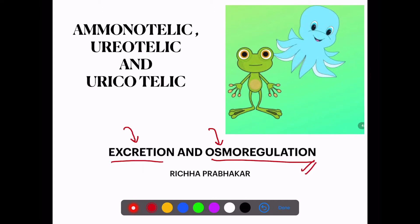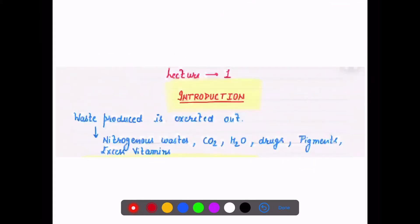In today's lecture, I have taken three types of excretion: ammonotelic, ureotelic, and uricotelic in different kinds of organisms. I will also tell you some very interesting tricks to help you remember their examples, because students often find it very difficult to remember them. So you are definitely going to enjoy this lecture.